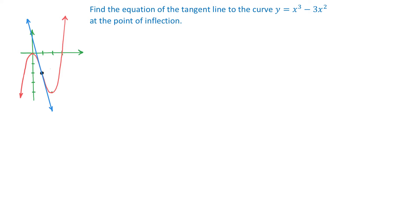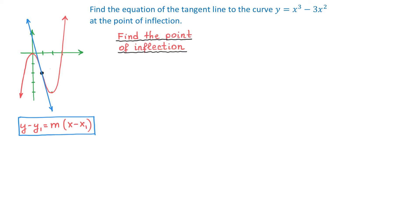Once we have them, we will use the point-slope form: y minus y1 equals m, which is the slope, times x minus x1. So let's start by finding the coordinates of the point of inflection. For this specific function, at the point of inflection the second derivative is equal to 0.